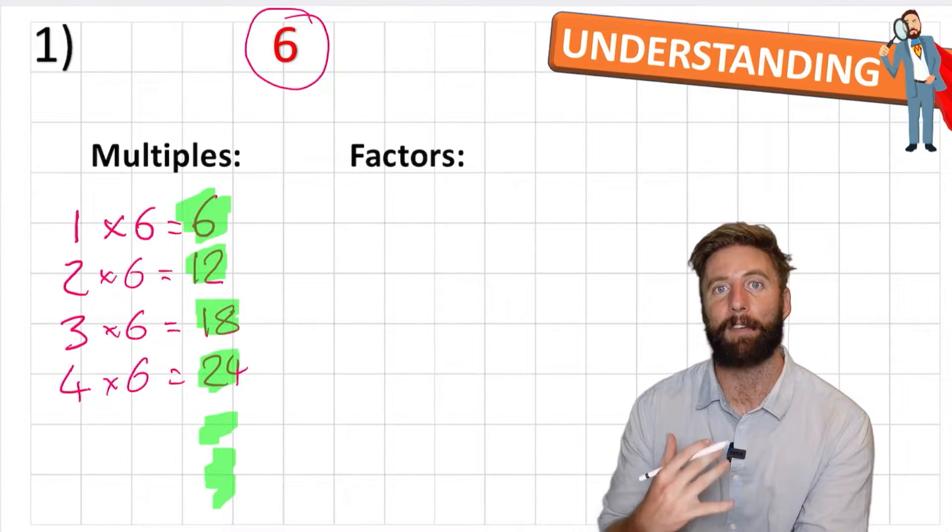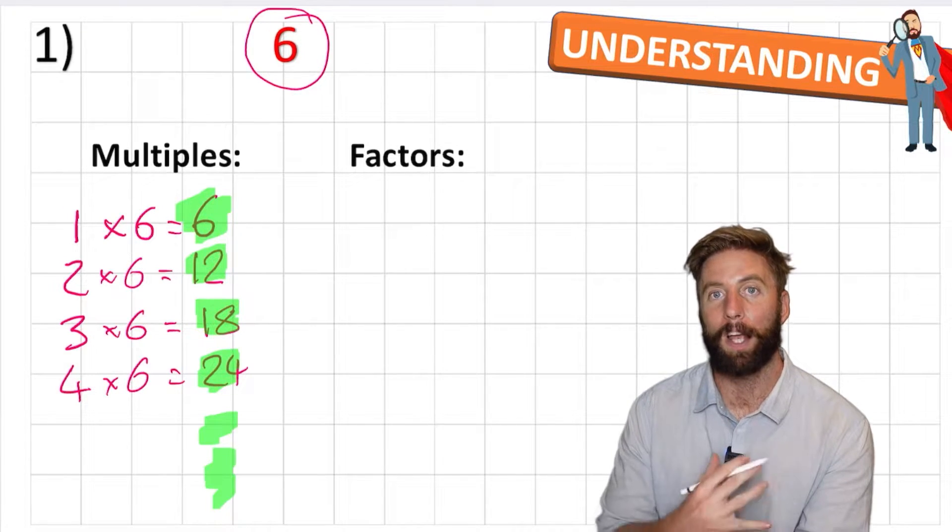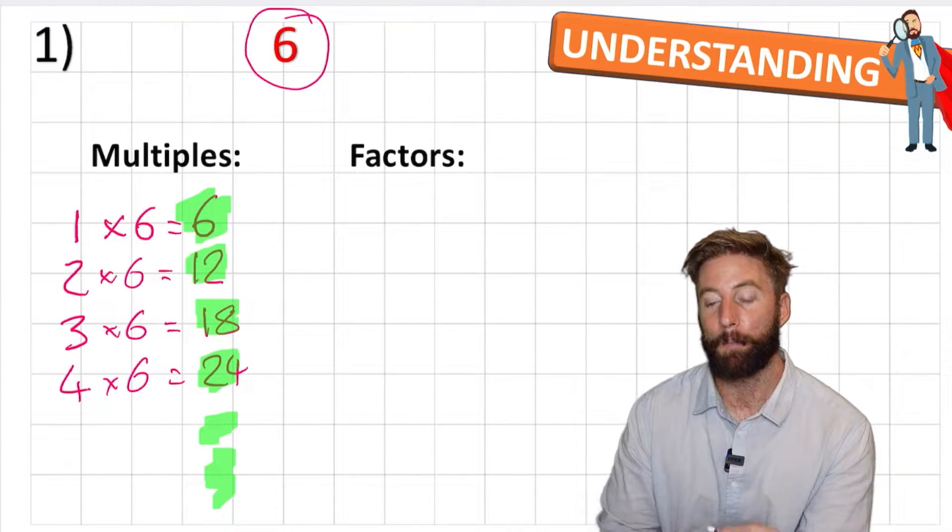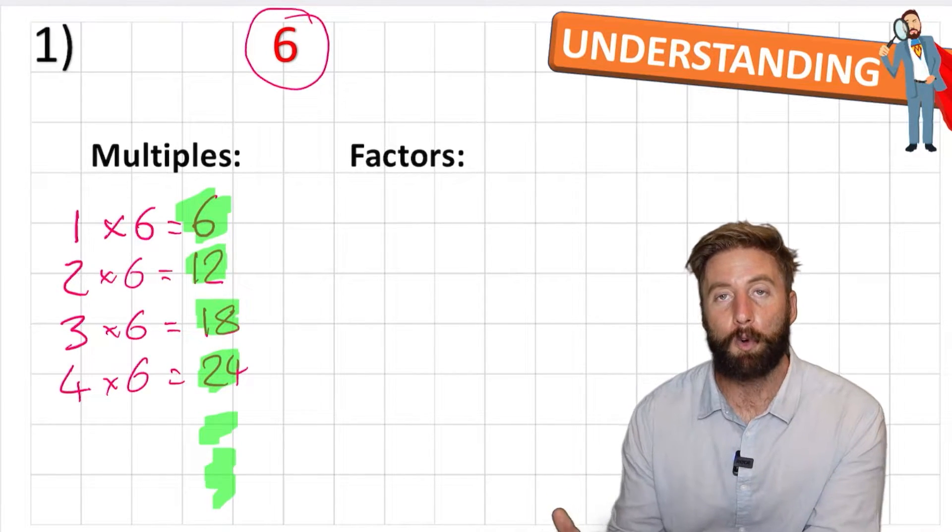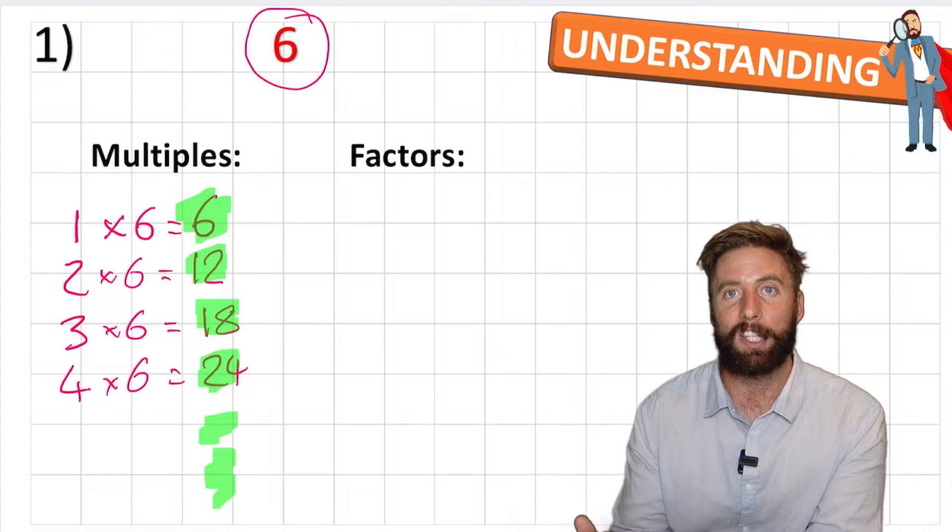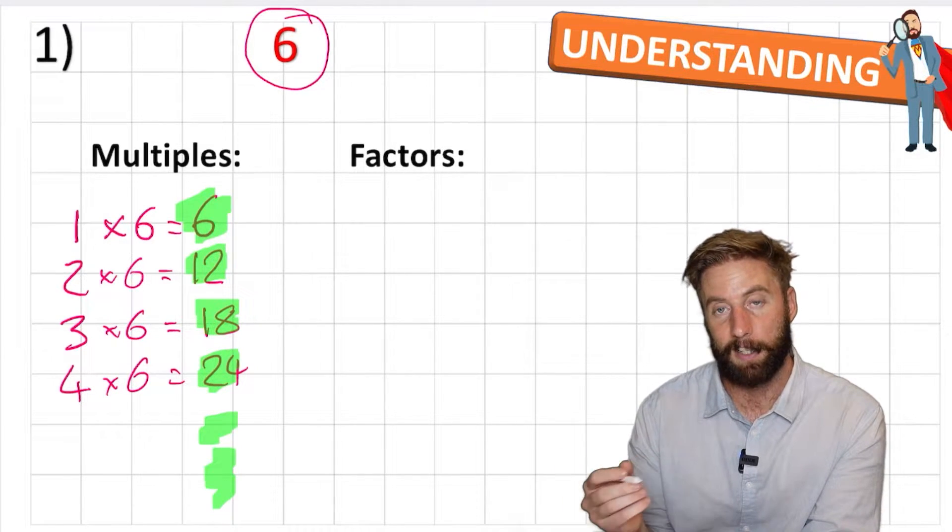Now you can have negative multiples, but we're not going to look at that in this video. We're going to look at positive numbers, but just so you know you can go backwards and have negative numbers too. So multiples is just the product of the integer multiplied by the target number, in this case 6.